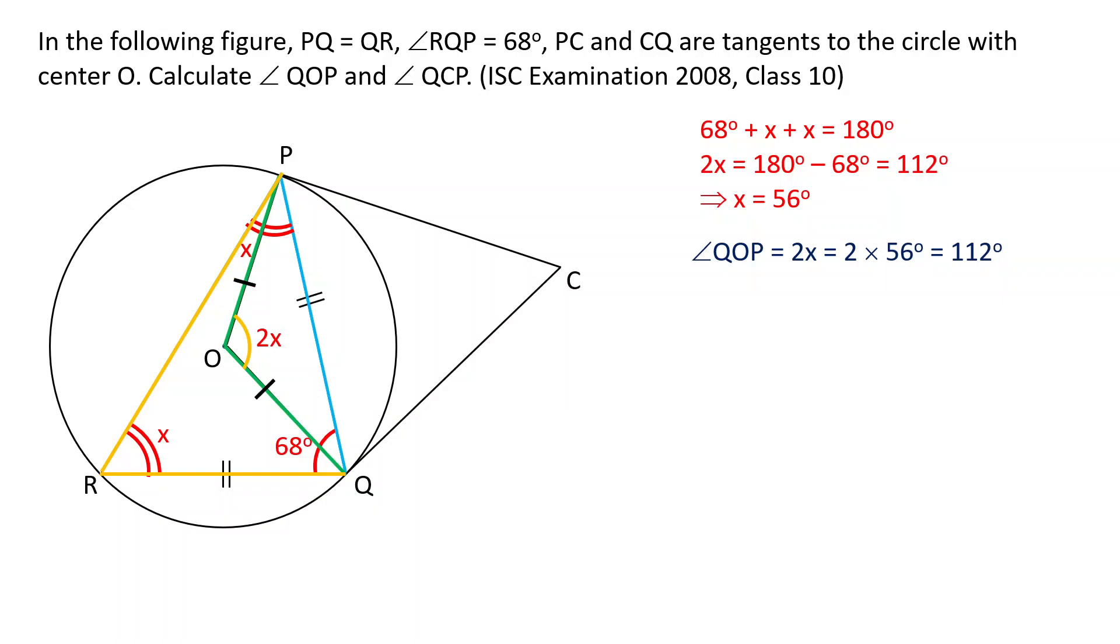Now OP and OQ are the radii, so both lengths are equal. So triangle QOP is an isosceles triangle and opposite angles are equal, so these two angles are y. Now we can find out the unknown angle y by sum of three angles of a triangle is 180 degrees. This will give the unknown angle y as 34 degrees.